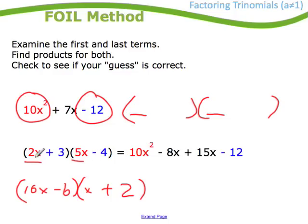Once I've sort of guessed the numbers that I throw in there, then I check it. So I multiply it through. So 2x times 5x, 10x squared. 2x times minus 4, minus 8x. 3 times 5, 15x. 3 times minus 4, minus 12.